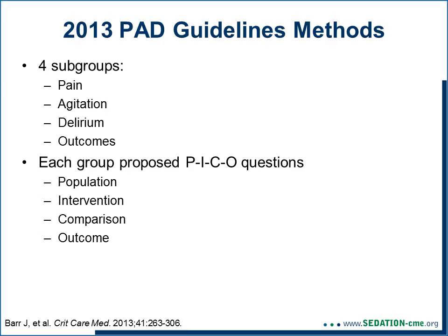Each of the four groups developed questions using the PICO format: population, intervention, comparison, and outcome. Some of these questions were similar but not exactly the same and came up with slightly different answers, which might on the surface appear to conflict with each other. But if you understand how the questions differed, it makes more sense, and I will try to point those out.